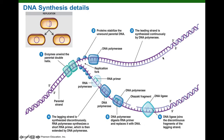Once DNA polymerase 3 starts synthesizing DNA, it can just travel around the chromosome as the replication fork moves. DNA polymerase 3 never has to stop making DNA. So this strand is being made in a process called continuous DNA synthesis, and it's called the leading strand.